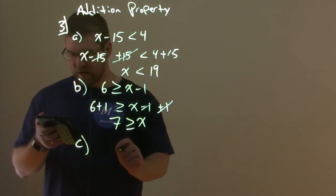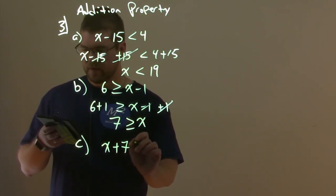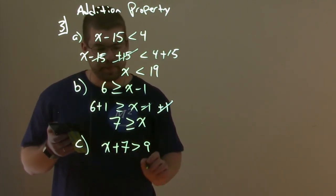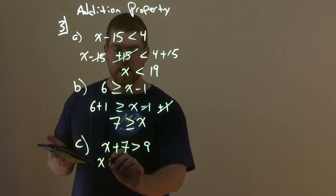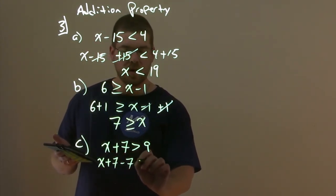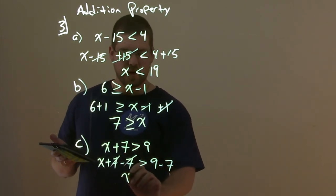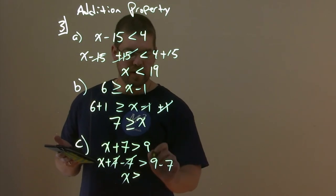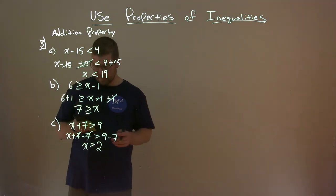And then part C here. Not too bad. We have X plus 7 is greater than 9. Same idea, we can subtract 7 from both sides. These 7's cancel, and you have X here is greater than 9 minus 7, which is 2.